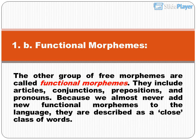Functional morphemes: the other group of free morphemes are called functional morphemes. They include articles, conjunctions, prepositions, and pronouns. Because we almost never add new functional morphemes to the language, they are described as a closed class of words.